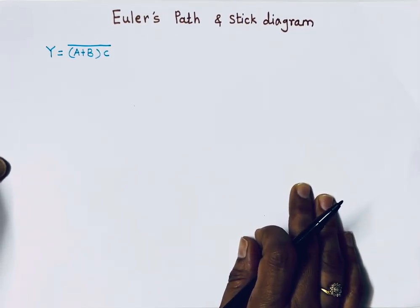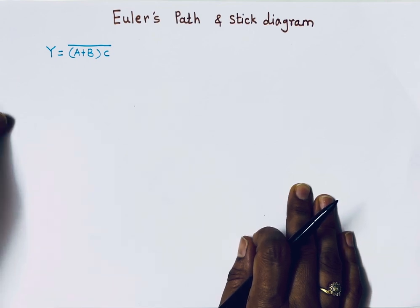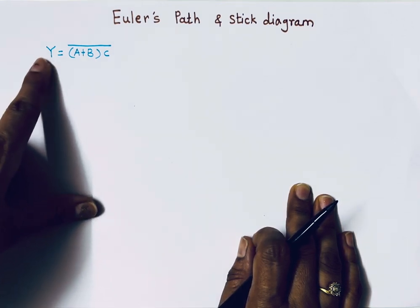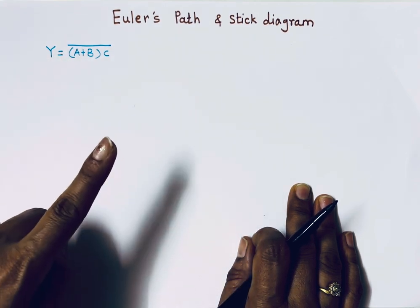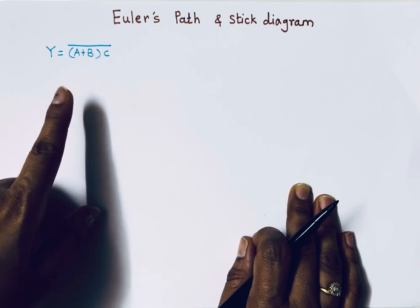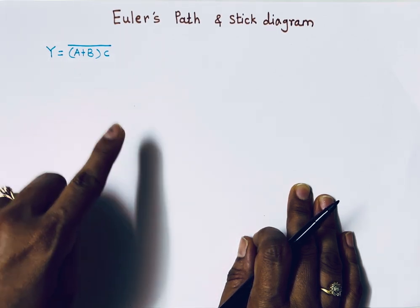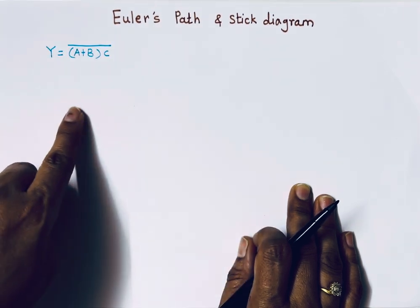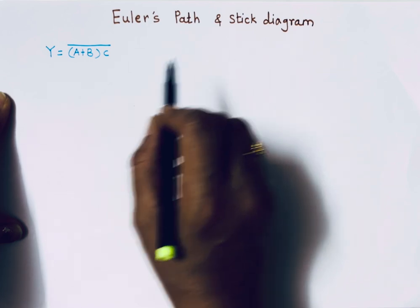Hello everyone, welcome to my channel. You are learning with Dr. Shobhanikam. In this video we will talk about Euler's path and stick diagram for a given Boolean function. I have taken a simple example: Y equals A plus B into C. The first step is to draw a CMOS-based combinational logic circuit, the next step is to draw Euler's path based on that circuit, and the last step is to draw the stick diagram.